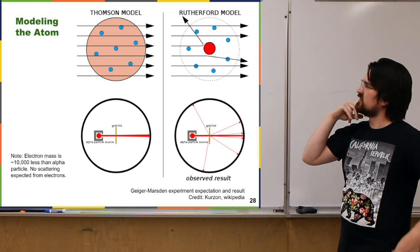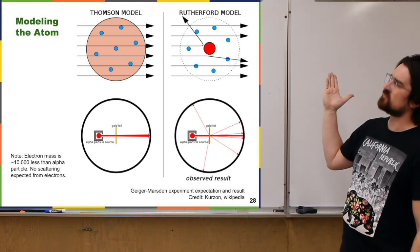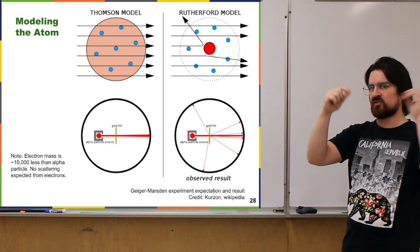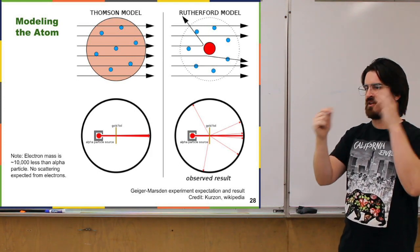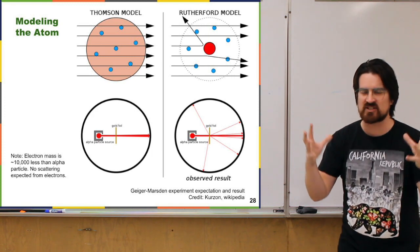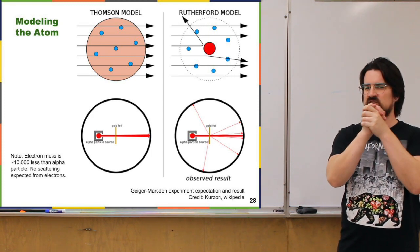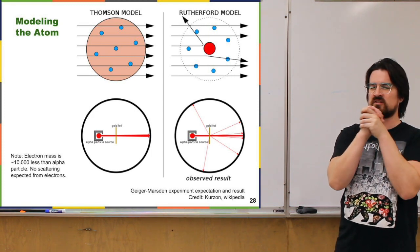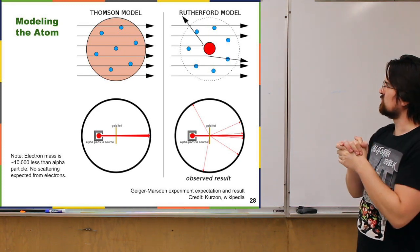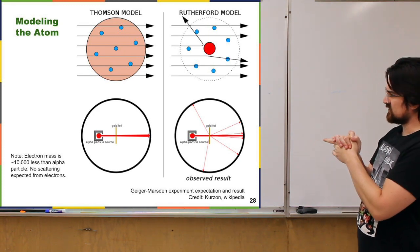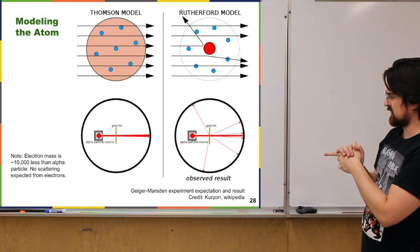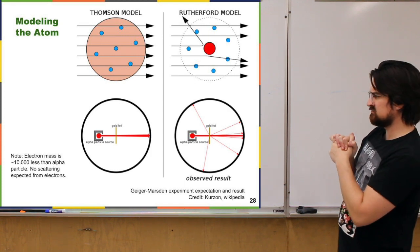The next evolution of the atomic model held that there are tiny negative things floating around in the atom, but the positive stuff is actually condensed into a small dense portion in the center. This idea for the Rutherford model came out of the results of the Geiger and Marsden experiment.